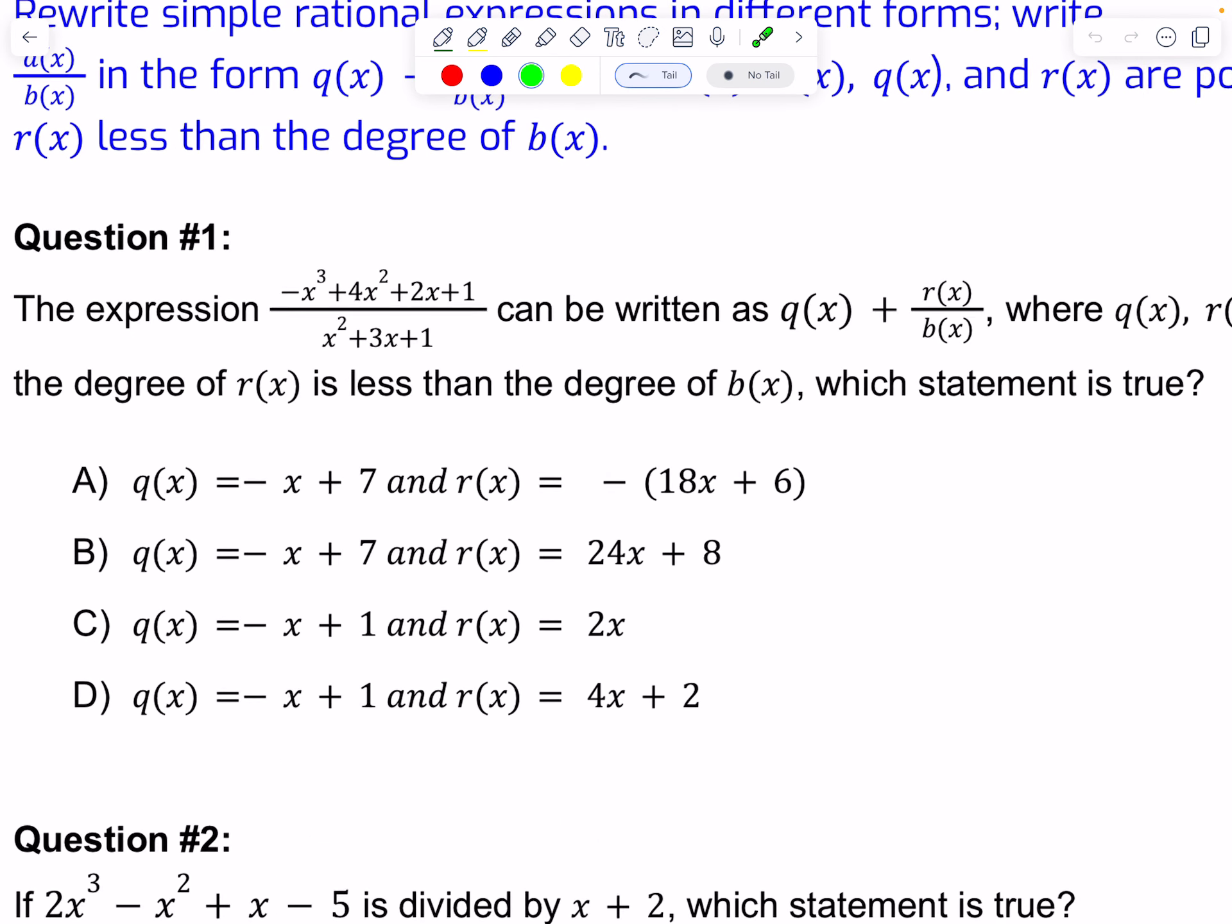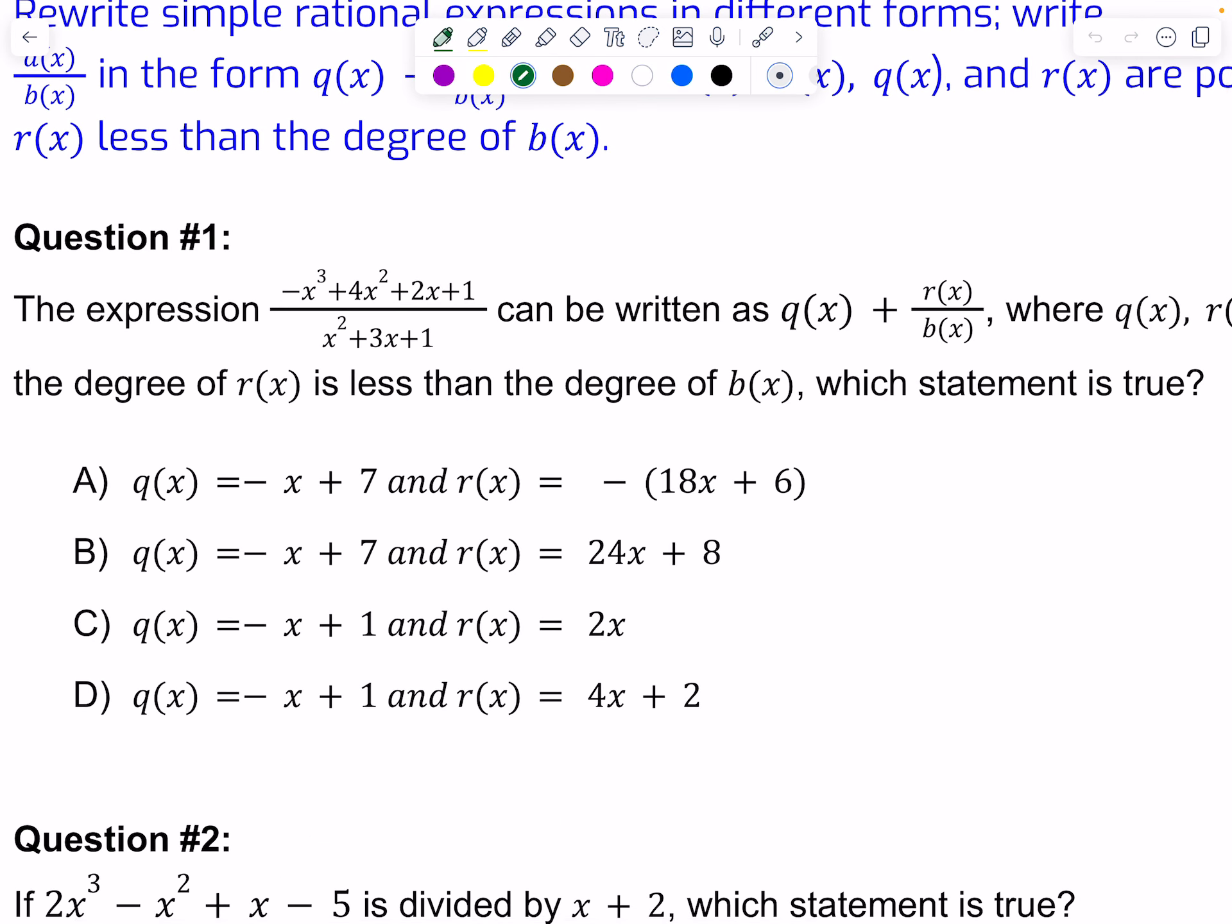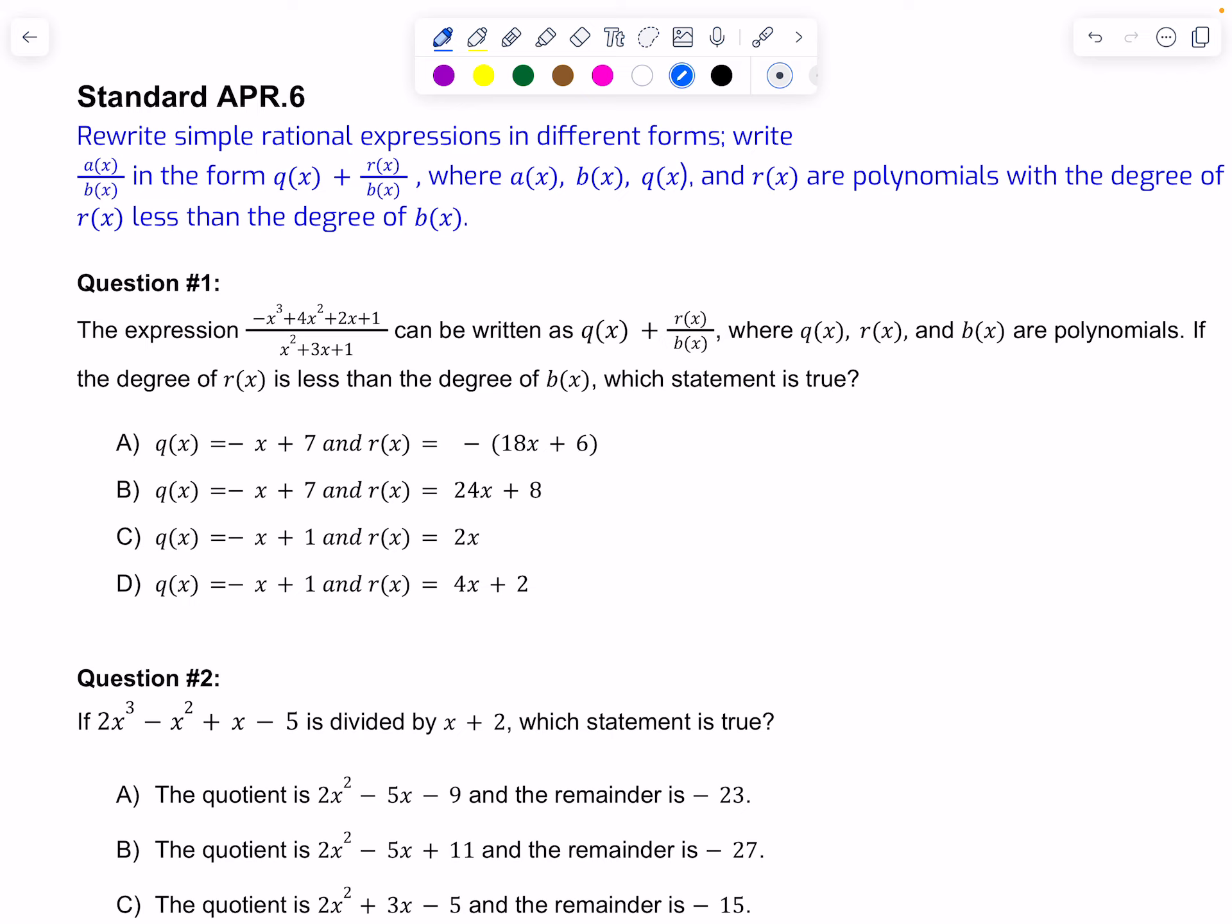I noticed that I cannot use synthetic division because the denominator, which is my divisor, is quadratic. You can't use synthetic division when that happens. You have to use long division. So we have x squared plus 3x plus 1 divided into negative x cubed plus 4x squared plus 2x plus 1.